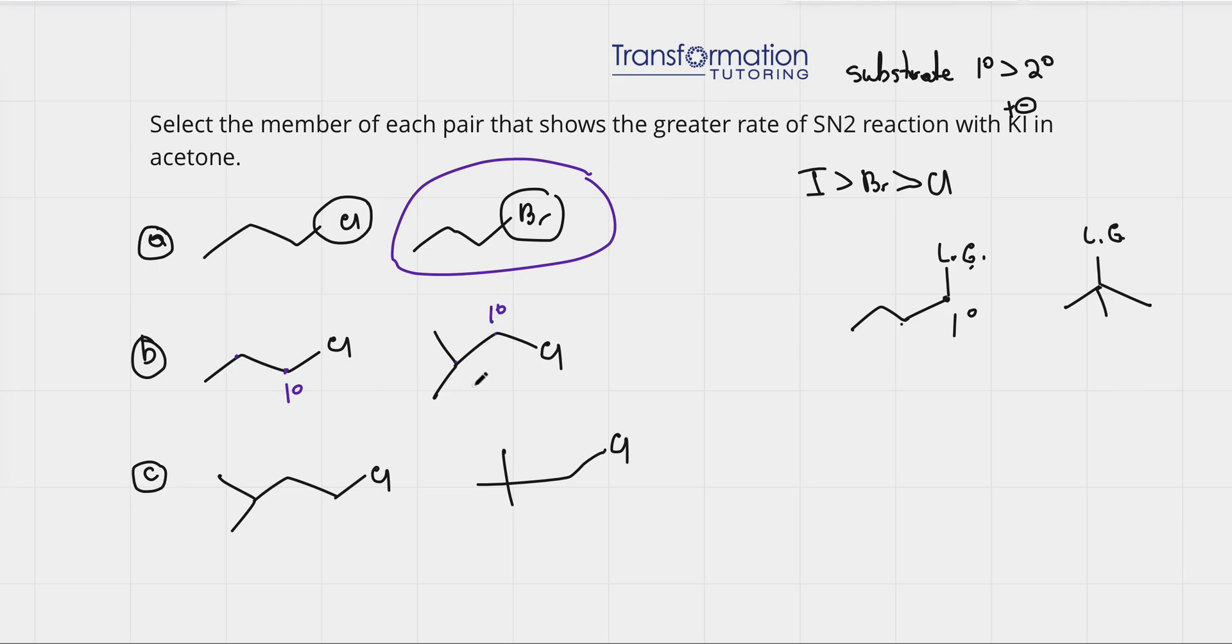So, how do we decide? Well, you can see that here on the carbon next to the carbon that the leaving group is attached to, it has a lot of branches. It is kind of bulky. Whereas here, the carbon that is next to the carbon that the leaving group is attached to, it doesn't have as many branches.